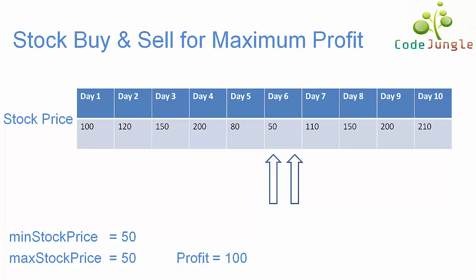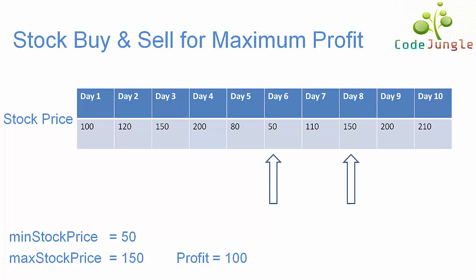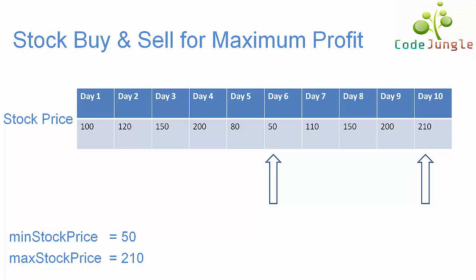When the condition is checked again, maximum stock price is less than day 7, which is true, so maximum stock price gets updated and becomes 110. In the next iteration, maximum stock price is less than day 8, which is also true, so it gets updated again. The same applies for day 9, and maximum stock price becomes 200. Similarly, for day 10, maximum stock price becomes 210.